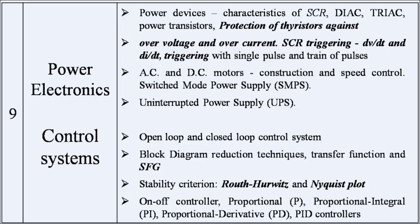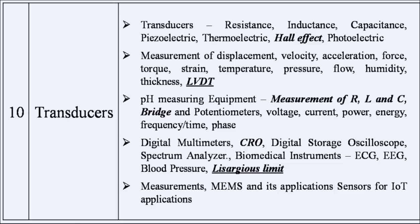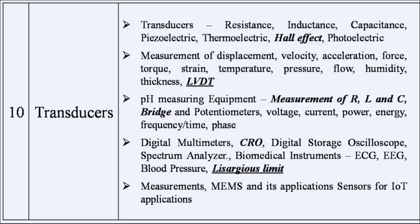PID controllers are very important. A very important topic is steady state error. In second order systems, focus on formulas for rise time, fall time, peak time, settling time, peak overshoot, and maximum peak overshoot. LVDT and Hall effect are important — Hall effect is almost zero in metals. Focus on bridges: Schering bridge, Wheatstone bridge, Kelvin's bridge, and Kelvin's double bridge. The megger instrument is very important for measuring resistance of very low, medium, and very high values.